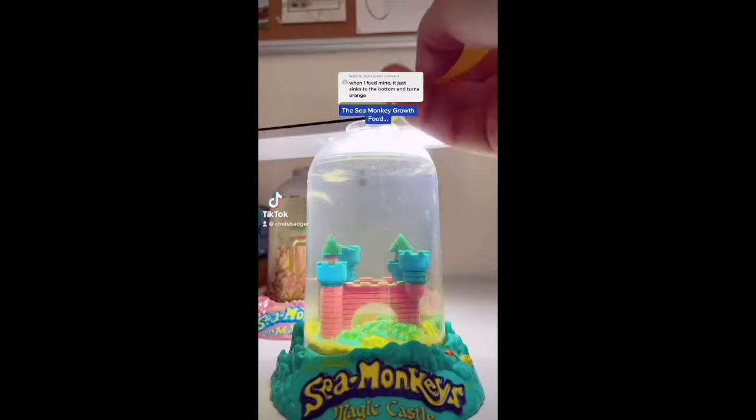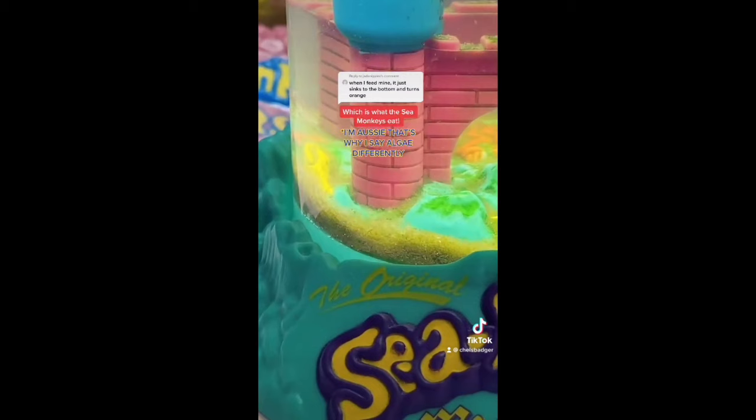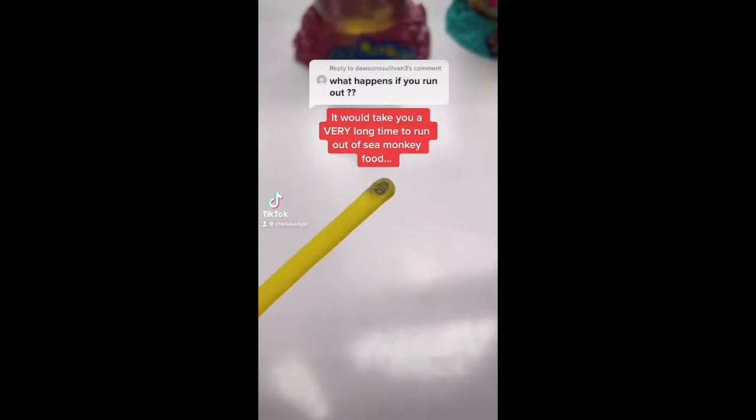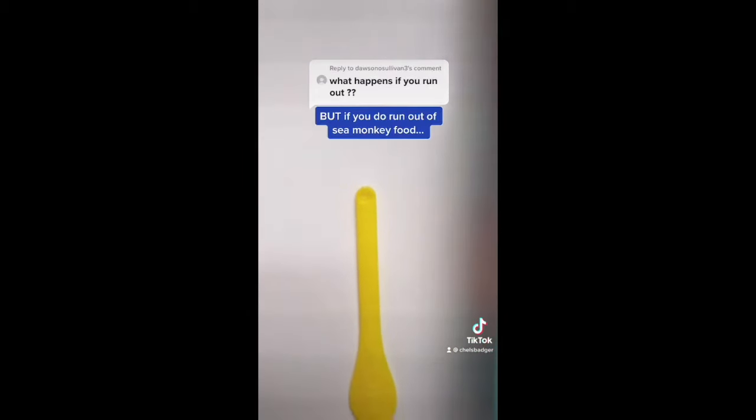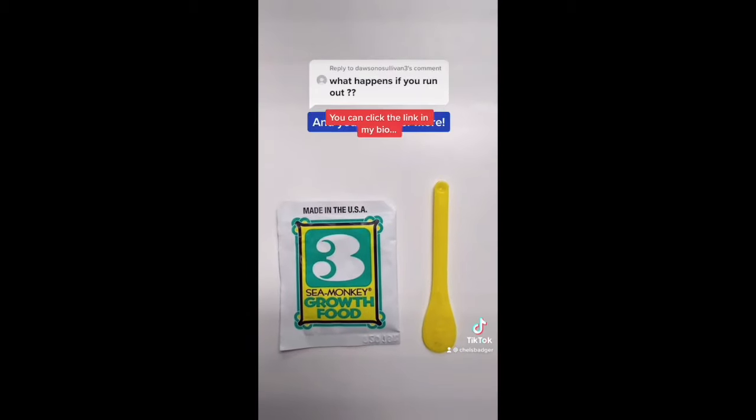When you feed your sea monkeys the sea monkey grow food, it is supposed to slowly sink to the bottom and eventually it will turn into algae which is what the sea monkeys eat. It would take you a very long time to run out of sea monkey food because you use such a small amount. For comparison, here's the spoon next to a Pringles can. But if you do run out of food you can click the link in my bio and you can order more.